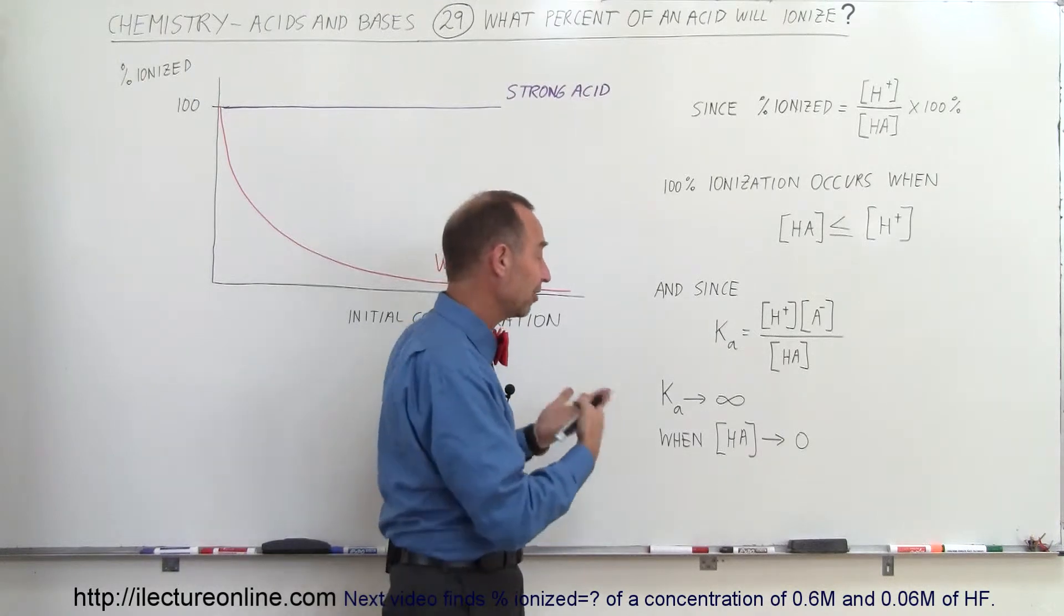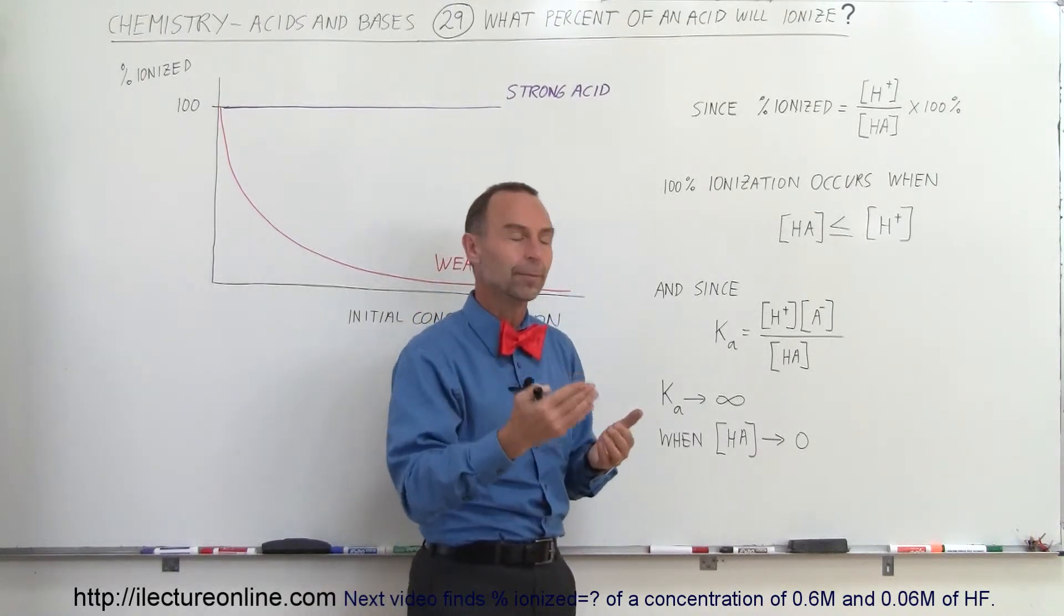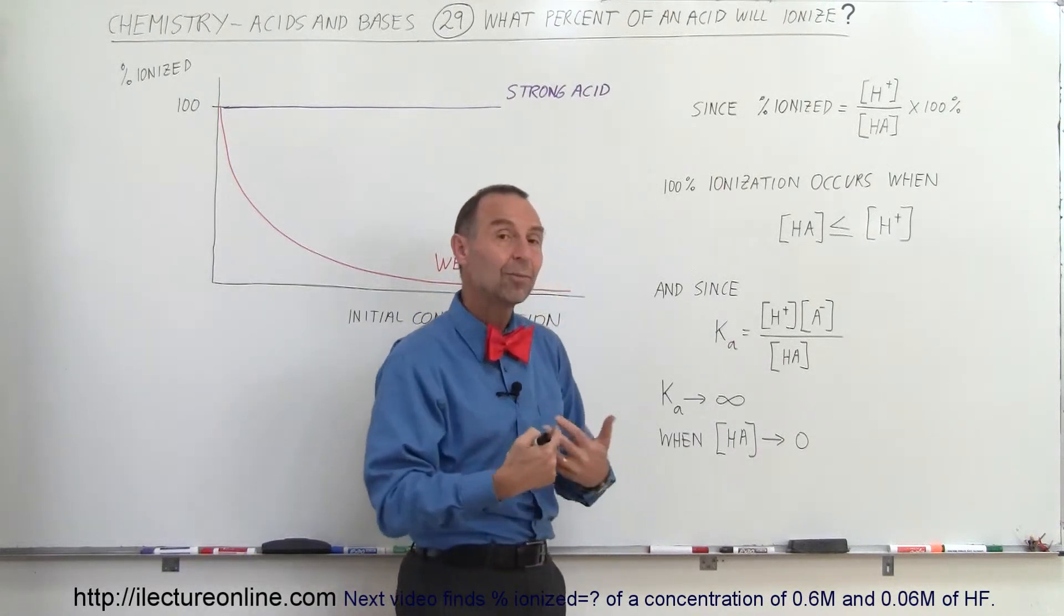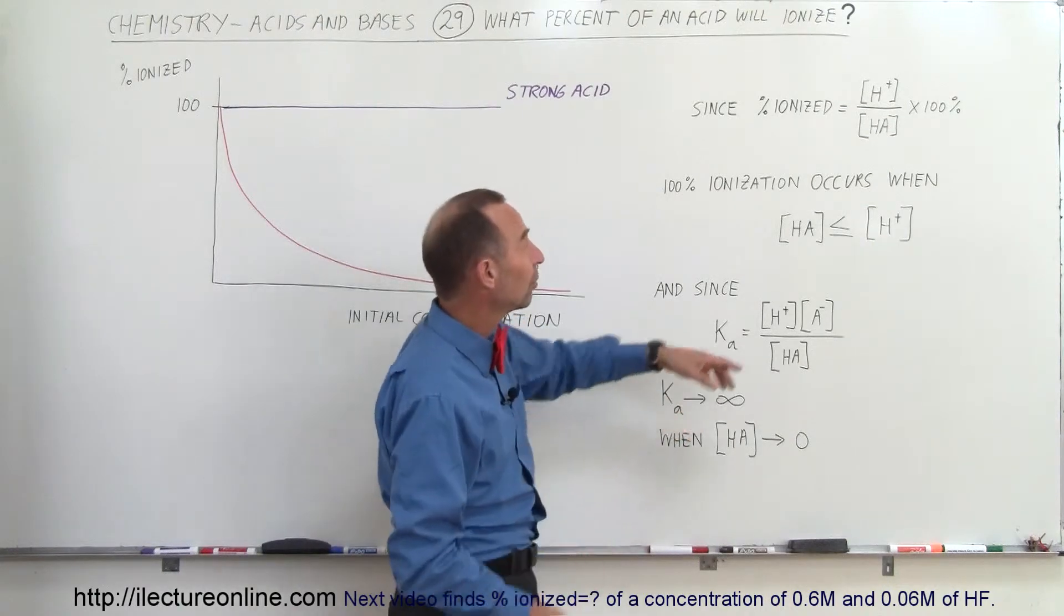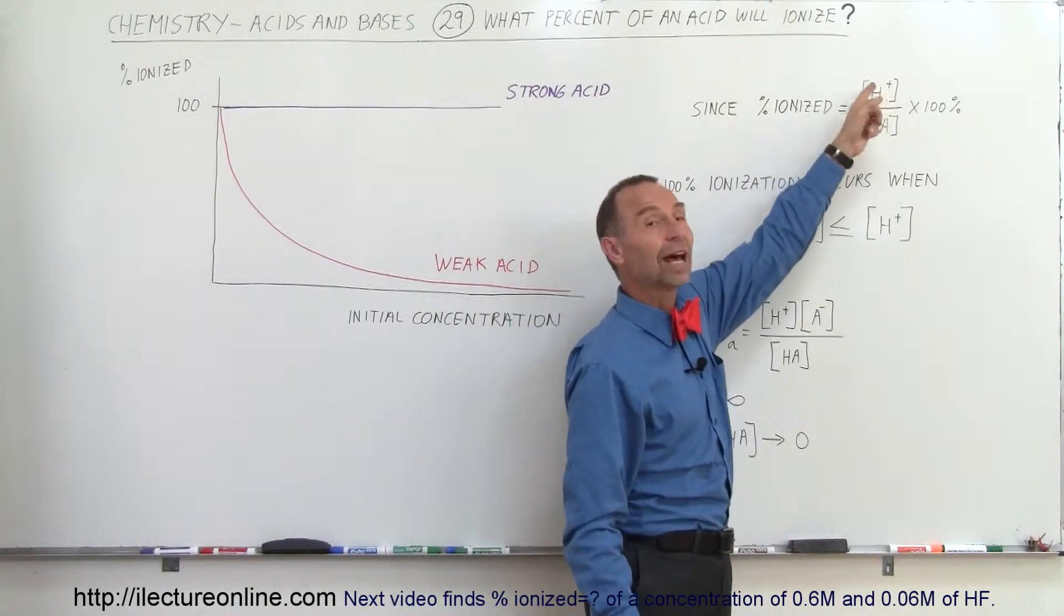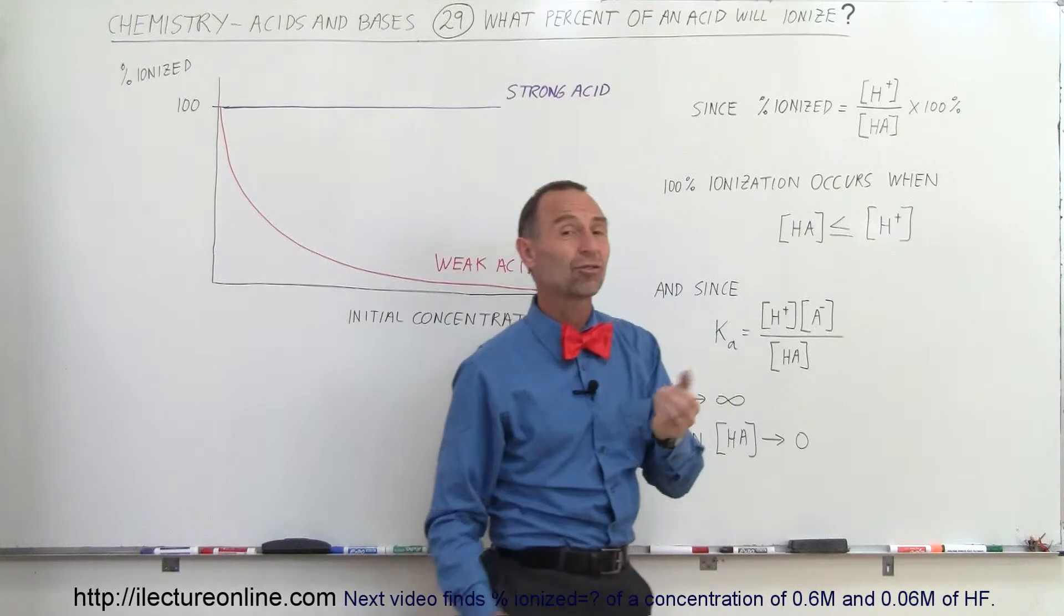So for strong acids, the ionization constant is much greater than one. For weak acids, it tends to be smaller than one, because there will be less of a concentration of the hydrogen ion compared to the final concentration of the acid.